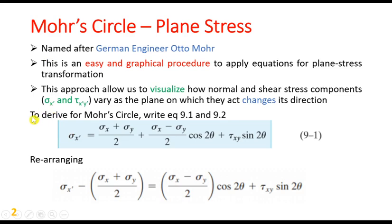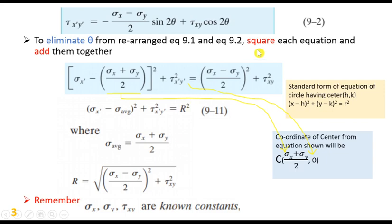Before drawing the Mohr circle, we write equations 9.1 and 9.2, covered in lectures 2 and 3 respectively. Equation 9.1: sigma x prime equals sigma x plus sigma y over 2, plus sigma x minus sigma y over 2 times cos 2 theta, plus tau xy times sin 2 theta. After rearranging, we move the sigma average term to the left side. Equation 9.2: tau x prime y prime equals minus sigma x minus sigma y over 2 times sin 2 theta, plus tau xy times cos 2 theta.